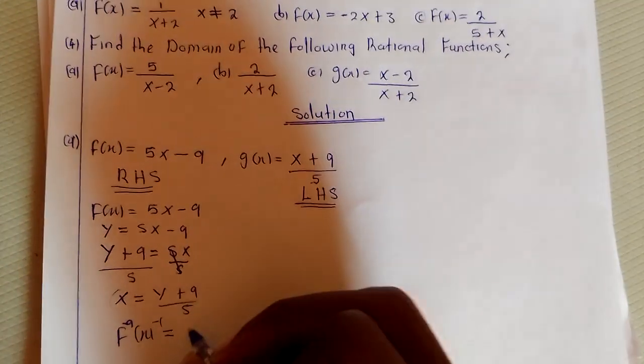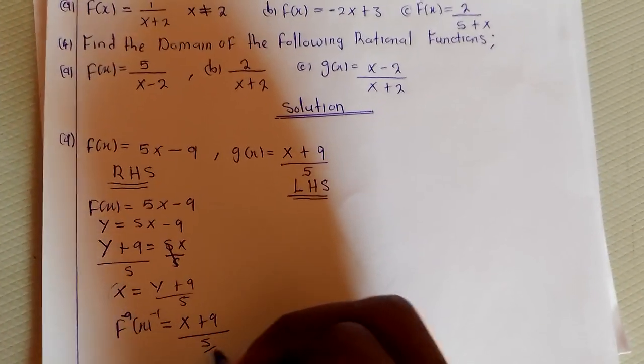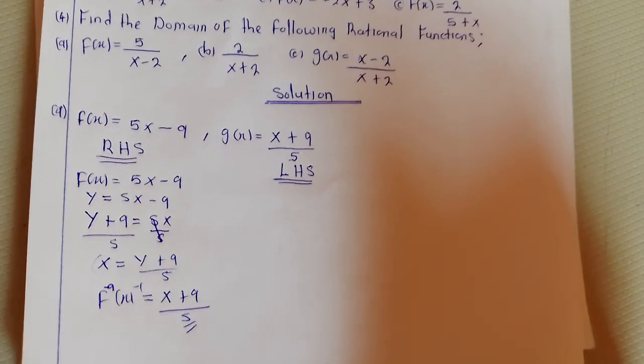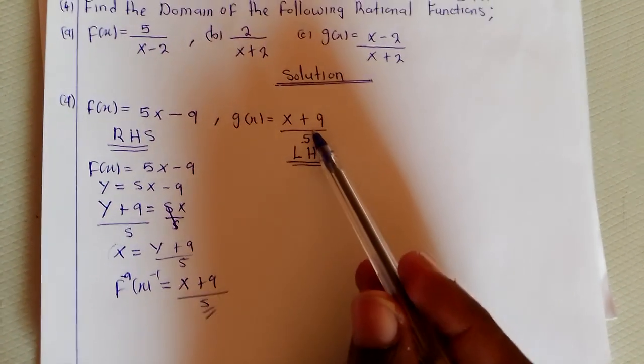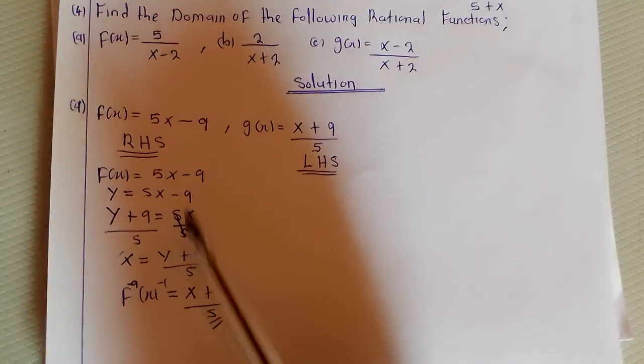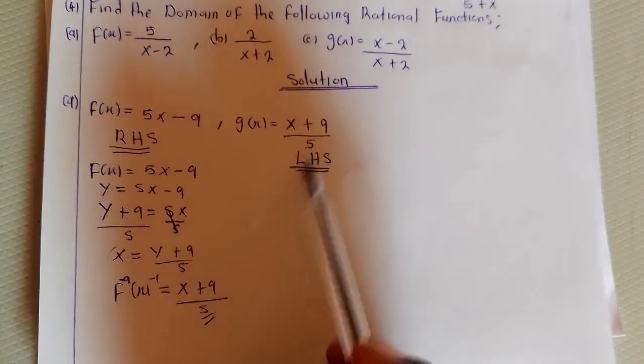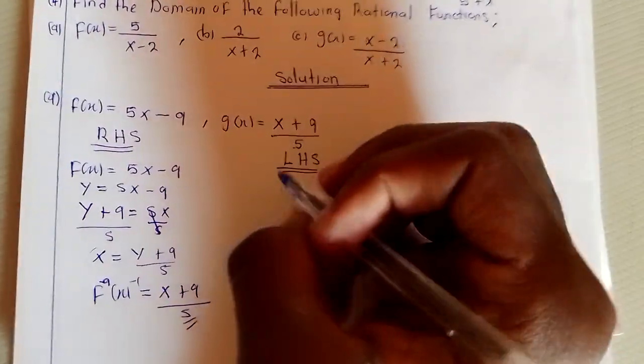Now we can replace y with x to get f^(-1)(x) = (x + 9)/5. We discovered that this here is the same as g(x), therefore we have proved that on the right hand side f^(-1)(x) = g(x). Let's try to prove if g^(-1)(x) = f(x).